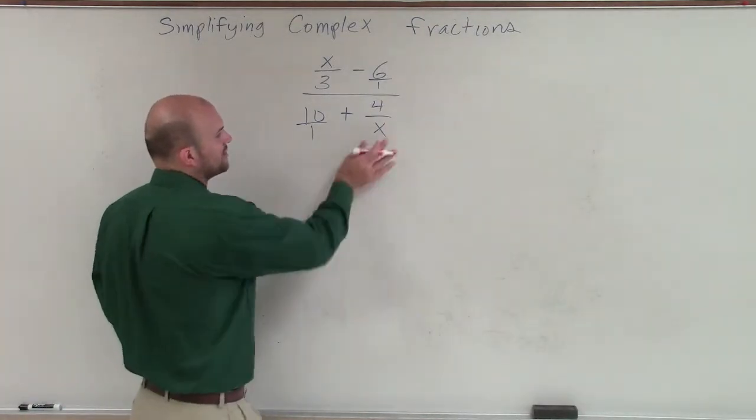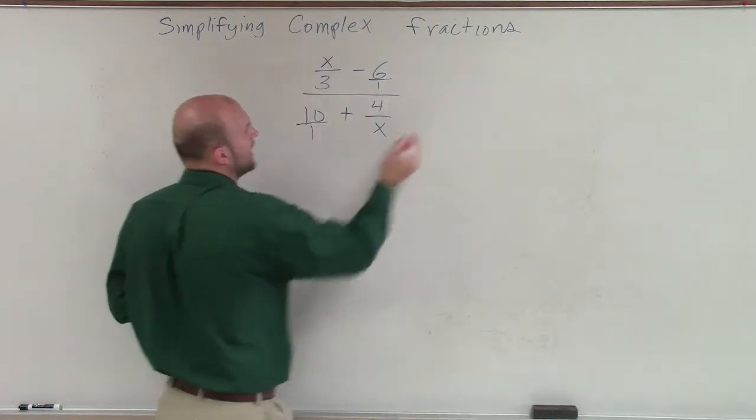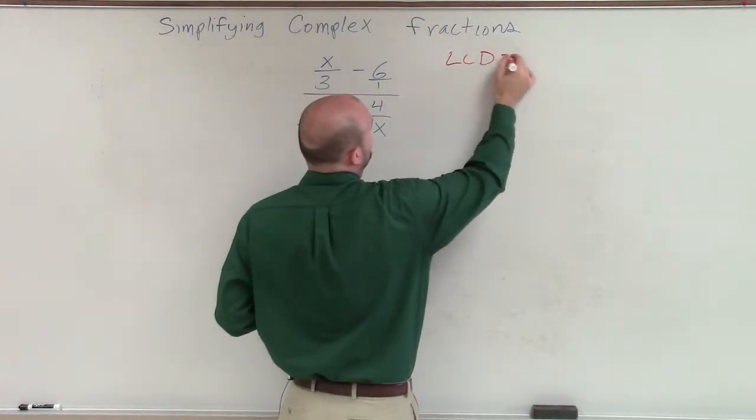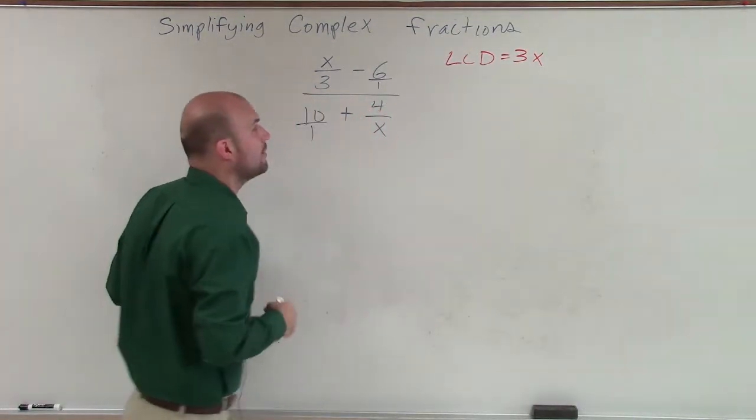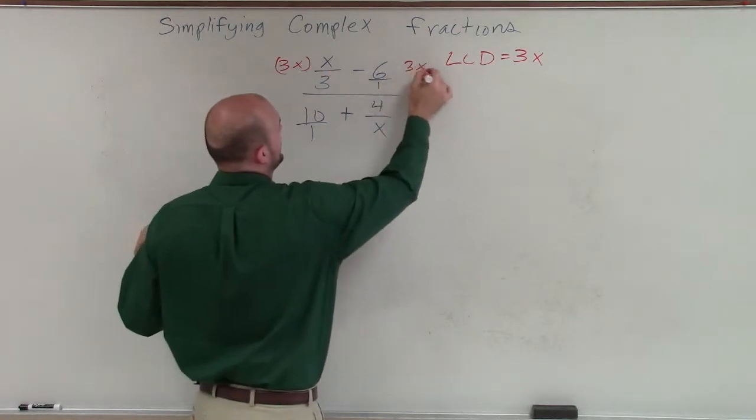So that's exactly what I'm going to do. I'm going to determine that out of all my denominators, I have 3, 1, 1, and x. So I'm going to say my LCD is going to equal 3x. So now what I'll do is I'll multiply every single term times 3x.